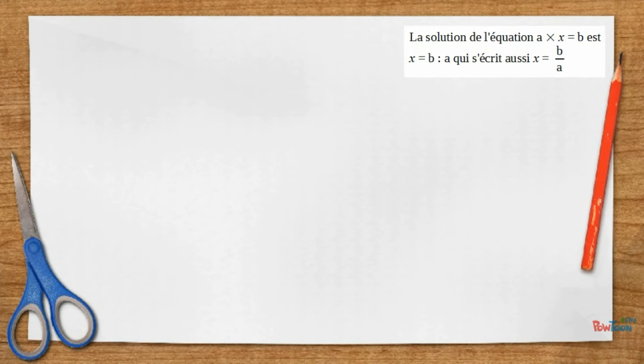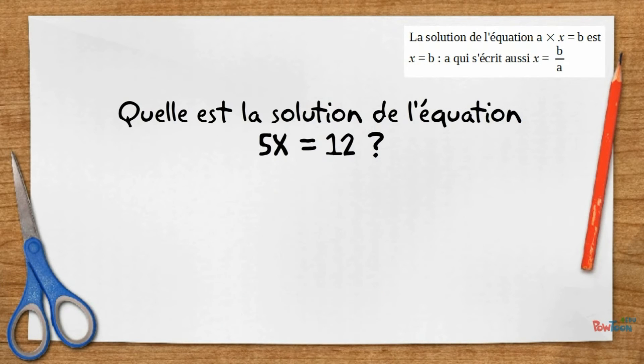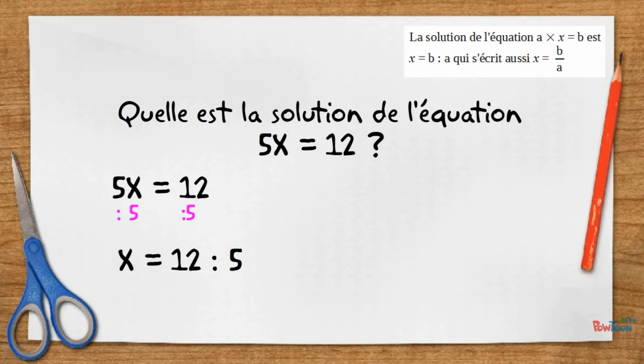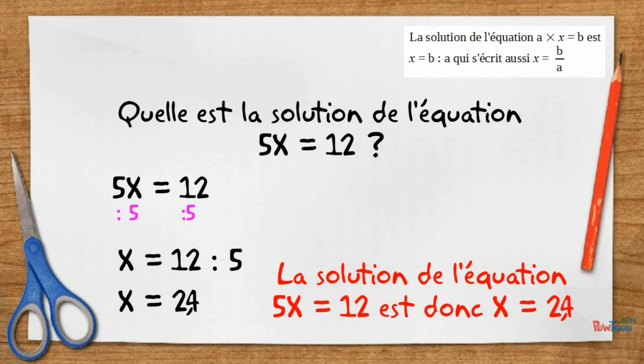Pour résoudre l'équation 5x égale 12, il faut isoler x. Pour cela, nous divisons les deux membres par 5. Ainsi, nous obtenons le résultat x égale 2,4.